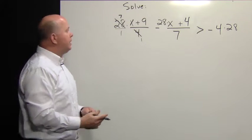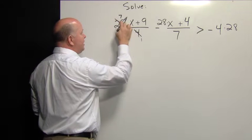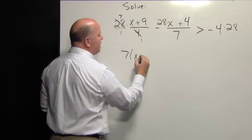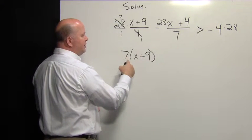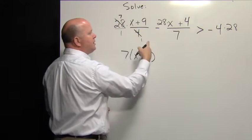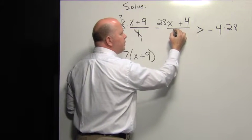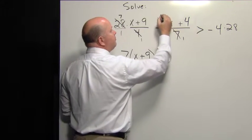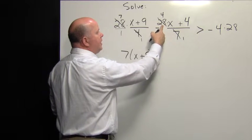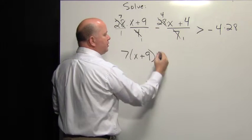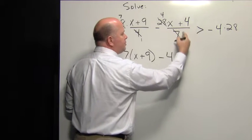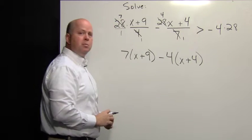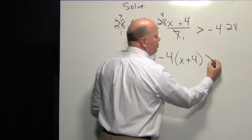It reads 7 times this quantity. Remember, this fraction bar is a grouping symbol, so we have 7 times this quantity. We apply the same technique to the second component: 7 has a factor of 7 in it once, and we have four factors of 7 in 28. Now we have negative, or our subtraction, of 4, times this quantity represented by the numerator.